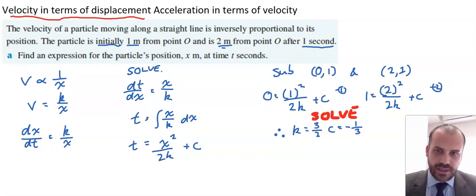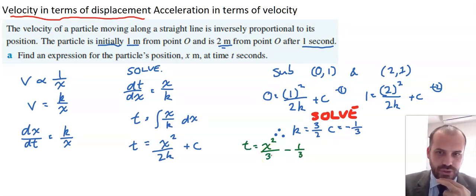So we get k equals 3/2, and c equals negative 1/3. And we can sub in k and c into this equation right here. Putting 3/2 in for k means that the denominator here is just going to be the number 3, because 2 times 3/2 is 3. And c is negative 1/3, so that's there.